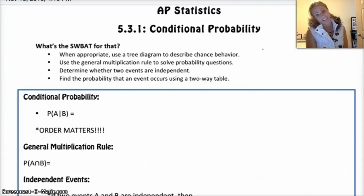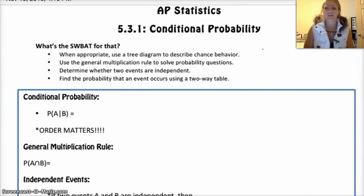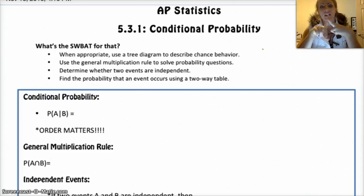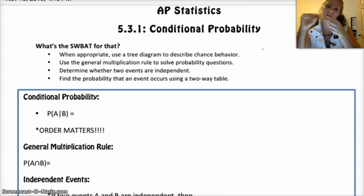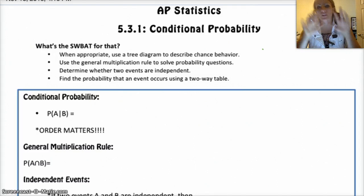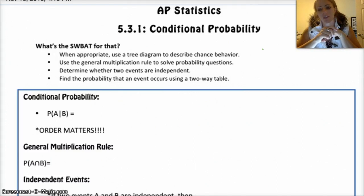So our SWBAT is being able to use a tree diagram to determine chance behavior, use the general multiplication rule to solve probability questions, determine which two events are independent, and then find the probability that an event occurs.